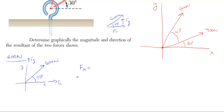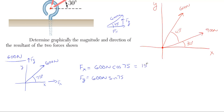For fx, it will be 600 newtons times cosine of 75 degrees, because cosine is adjacent and fx is adjacent to the 75-degree angle. For fy, it will be 600 newtons times sine of 75 degrees, because fy is opposite that angle and sine is opposite. Calculating these: fx comes out to 155.3 newtons to the right, and fy is 579.6 newtons in the upward direction.